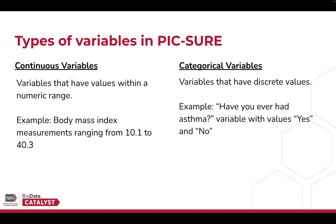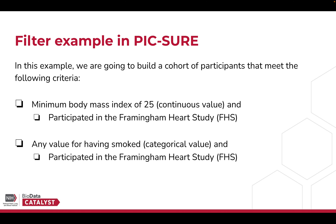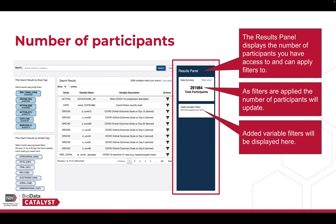Let's review an example of how to filter on each type of variable. In this example, we are going to build a cohort of those that participated in the Framingham Heart Study, known as FHS, with a minimum body mass index of 25 as a continuous variable, and a categorical value of having smoked as a categorical value.